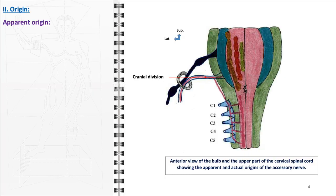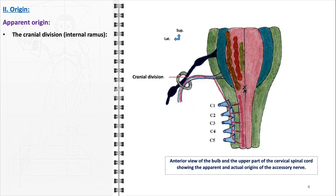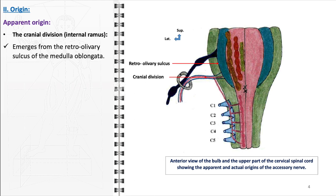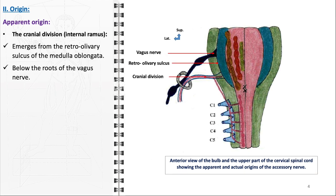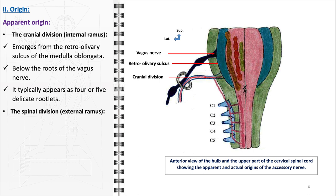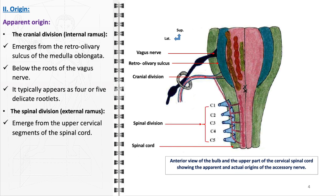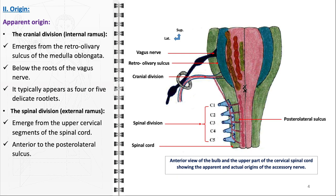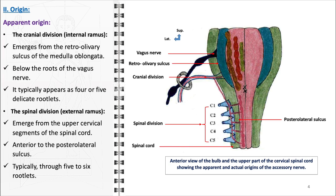The accessory nerve has a unique apparent origin for each division. The cranial part, also referred to as the internal ramus, has its apparent origin in the retroolivary sulcus of the medulla oblongata, situated below the roots of the vagus nerve, typically emerging as four or five delicate rootlets. The spinal division, or external ramus, arises from the upper cervical segments of the spinal cord, with its apparent origin anterior to the posterolateral sulcus, typically encompassing the C1 to C5 levels, emerging through five to six rootlets responsible for its motor functions.